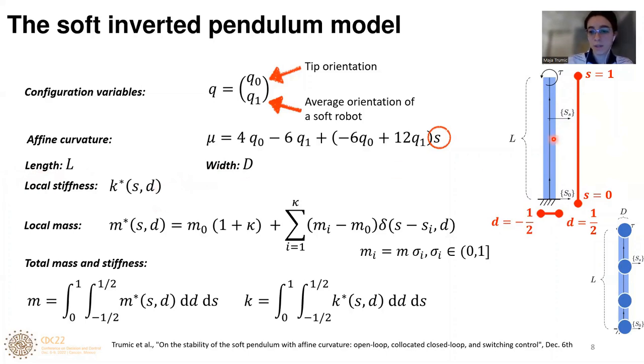We have one soft pendulum whose length is L and whose width is D. For some point (s,d) on this pendulum, we can define local stiffness k* and local mass m*. In this paper, we consider local mass that is quite general. It encompasses the cases when the mass is uniformly distributed along the soft robot body and also the cases when we have kappa lumped masses along the central axis. The total mass and total stiffness can be obtained by integrating local stiffness and mass along the local coordinates.